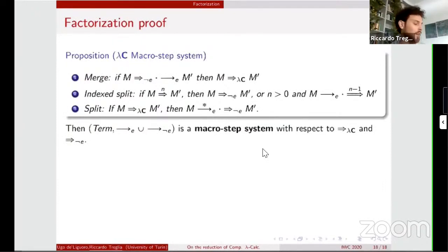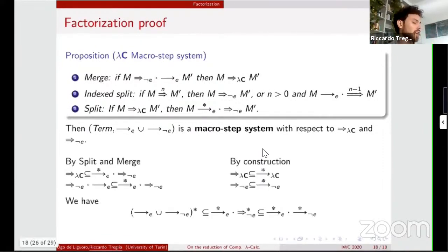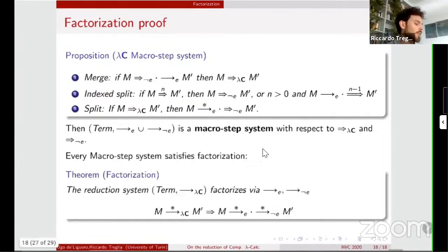Using these two auxiliary parallel reductions, we will prove the final proposition, stating that our abstract reduction system is a macrostep system with respect to these two parallel reductions, which we will be able to obtain the factorization results. Each finite sequence can be rearranged, putting a prefix of essential steps and postfix inessential steps. Thank you.